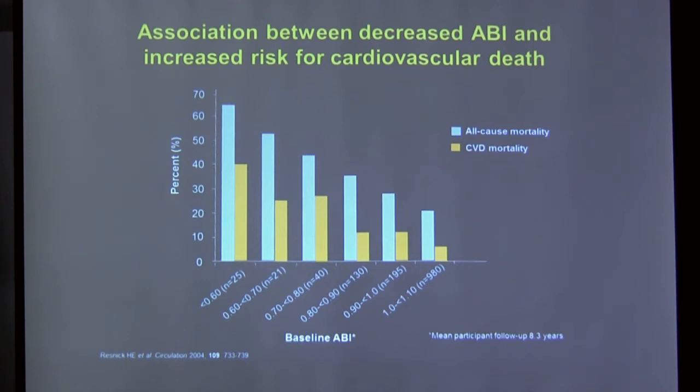The ABI is a simple single value with substantial prognostic data. As the ABI decreases, all-cause mortality and cardiovascular mortality rise significantly, reinforcing that PAD is a marker for systemic cardiovascular disease. A lower ABI corresponds to worse prognosis beyond just the leg.